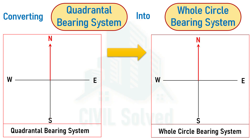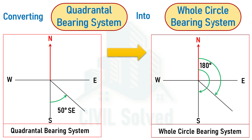If you have been given another line that lies in the southeast quadrant with a bearing of 50 degrees Southeast, and are asked to convert it into the WCB system, the same line is drawn. In WCB, the angle is measured from north clockwise. The total angle from north to south is 180 degrees, and the line makes 50 degrees with the south, so the remaining angle is 180 minus 50,